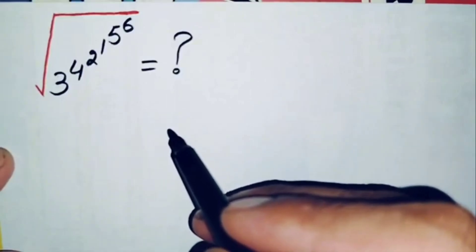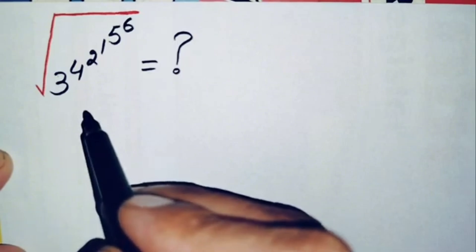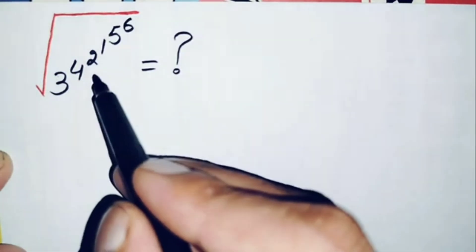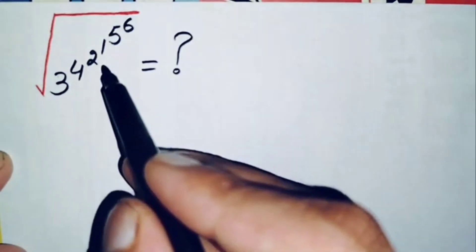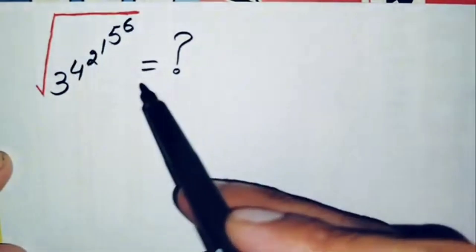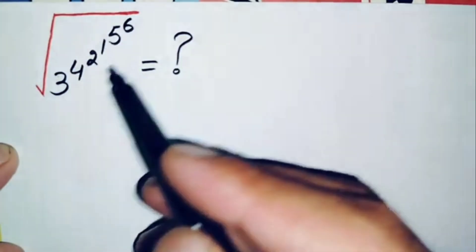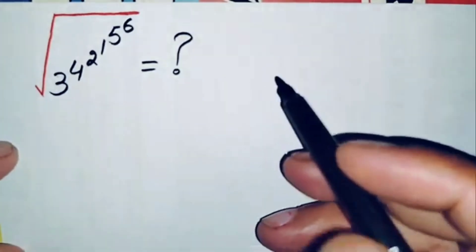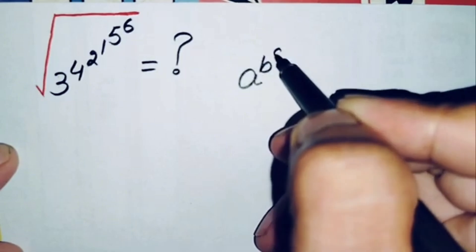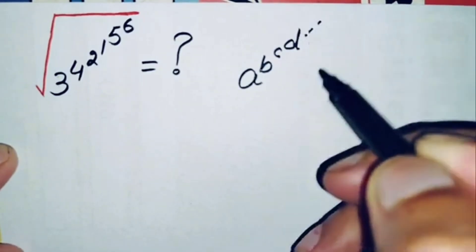Hello everyone, welcome to Math Explorer. In this video I'm going to solve this interesting square root math problem: square root of 3 raised to power 4, raised to power 2, raised to power 1, raised to power 5, raised to power 6. This number is in the form a raised to power b raised to power c raised to power d, and so on.